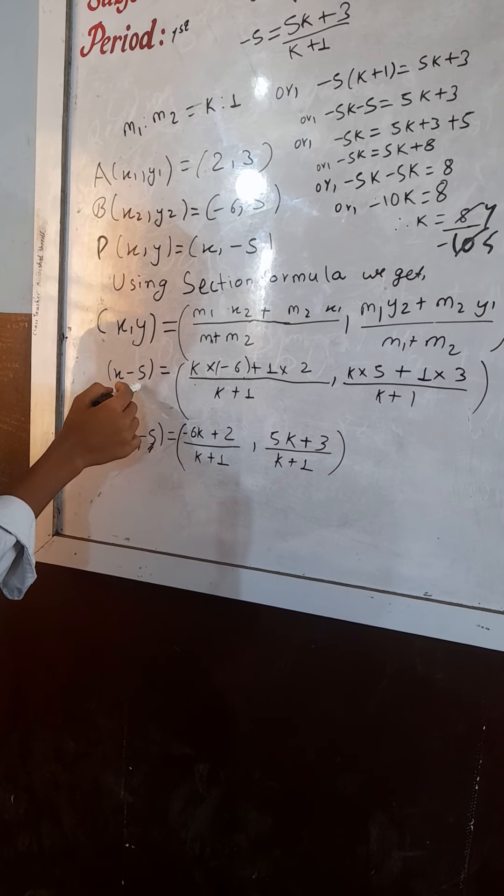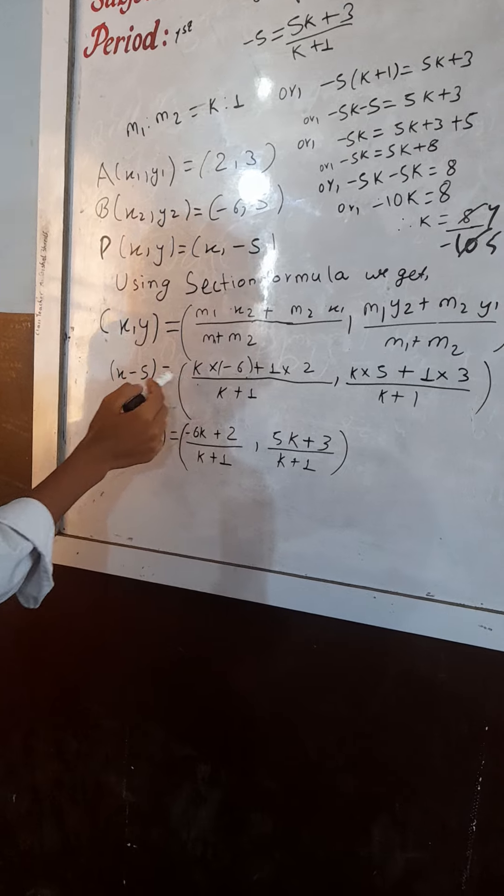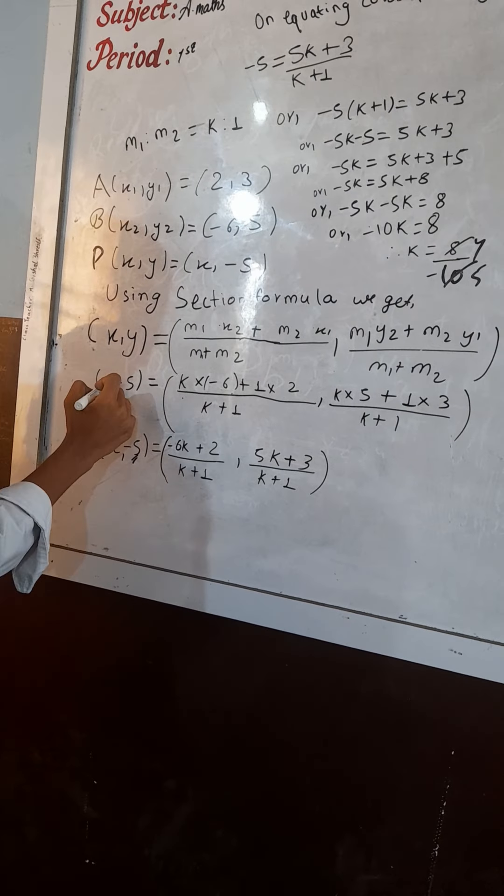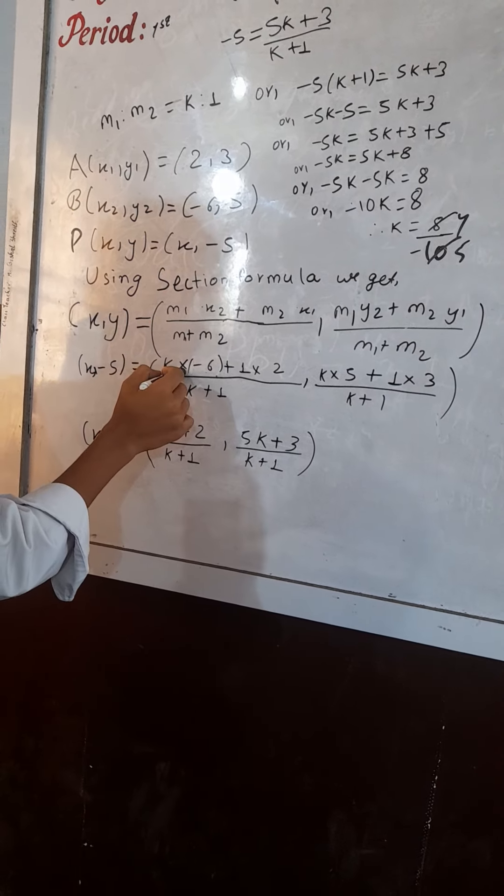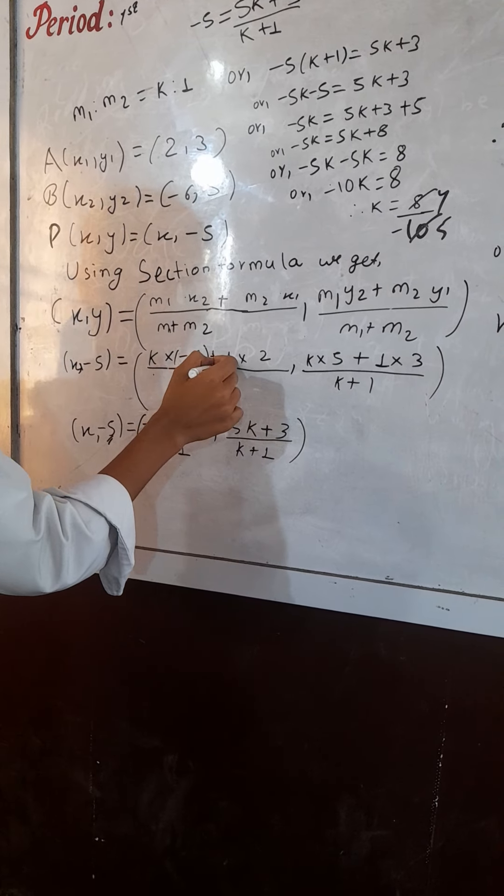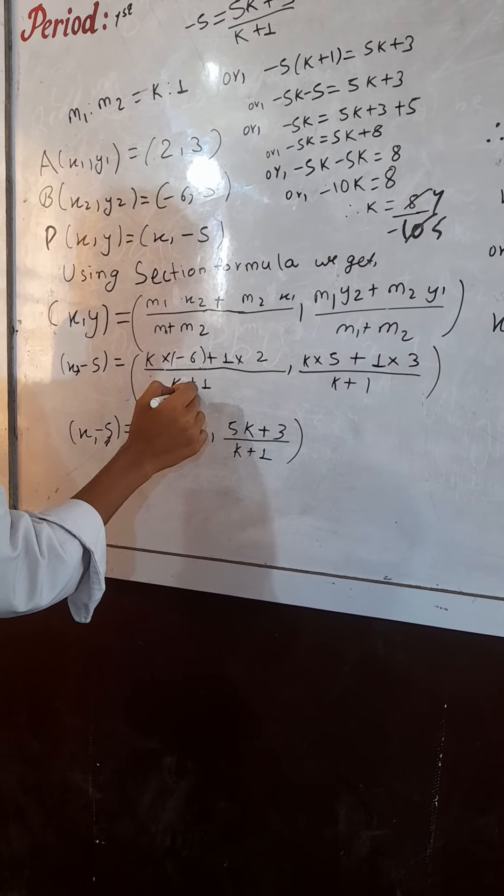X comma minus 5. The comma is missing from here. X comma minus 5 is equal to K into minus 6 plus 1 into 2 upon K plus 1.